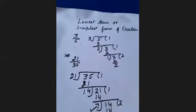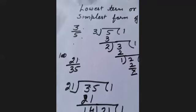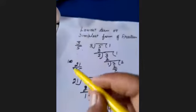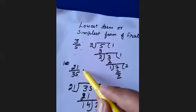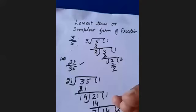A second method: observe 21 and 35 carefully. Both 21 and 35 are multiples of 7. Since 7 times 3 equals 21 and 7 times 5 equals 35, both numerator and denominator are multiples of 7, confirming that 21 upon 35 is not in its simplest form.